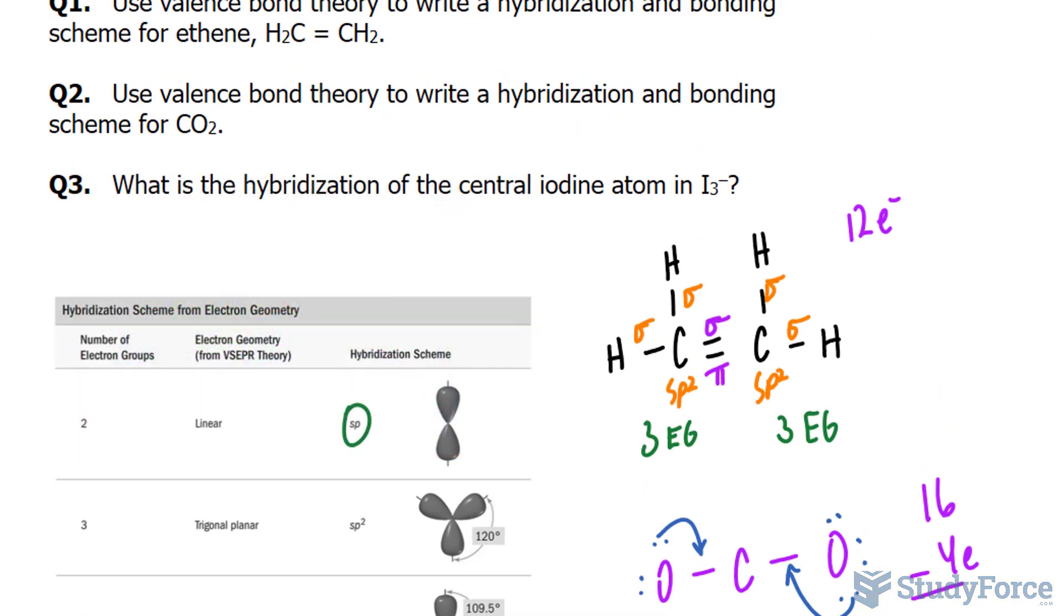In question number three, we have to find the hybridization of the central iodine atom in I3 negative. So we have a negative ion here, an anion, and it consists of three iodine atoms. Let's begin with the Lewis structure.